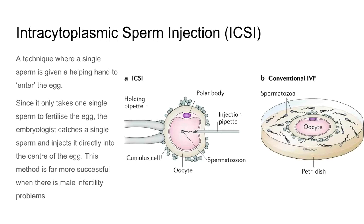Another process is intracytoplasmic sperm injection, where the sperm is given a helping hand to enter the egg. This is far more successful when there are male infertility problems, as opposed to conventional IVF.